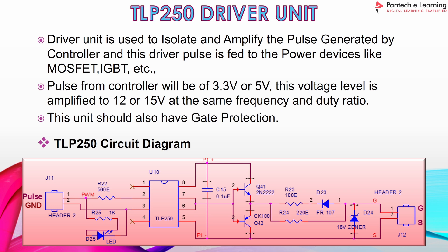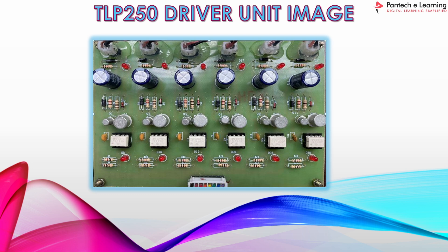Now we can see the TLP250 driver unit. This driver unit is used to amplify and isolate the pulse generated by the controller. From the controller, the driver pulse is given to the MOSFET or IGBT. From the pulse generator, the pulse will be generated up to 3.3V to 5V. By using the TLP250 driver board, we can amplify it up to 12 to 15V at the same frequency and duty ratio. The TLP250 driver board also has gate protection. This is the circuit diagram for the TLP250 driver board.